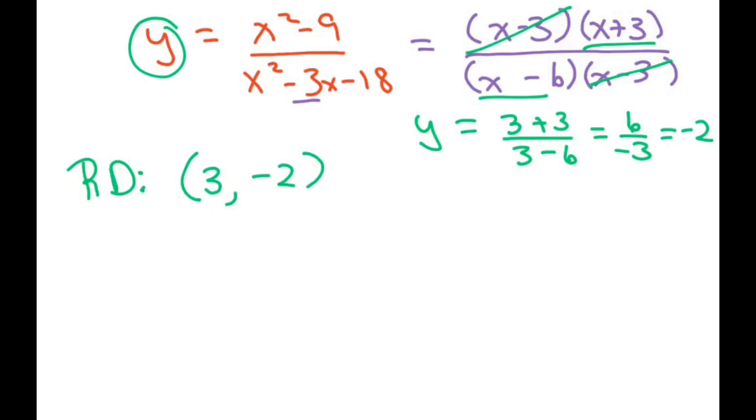Our horizontal asymptote is y equals 1, because our degrees are the same. So you just divide 1 divided by 1, so you get y equals 1. Make sure you write this as a line.